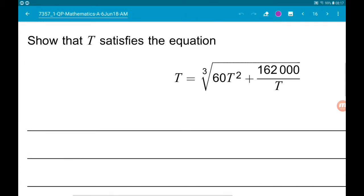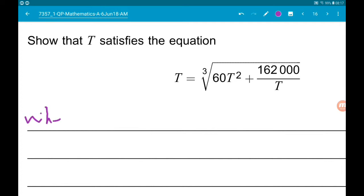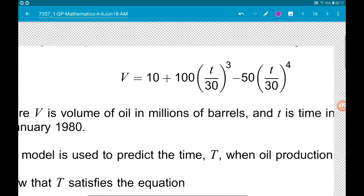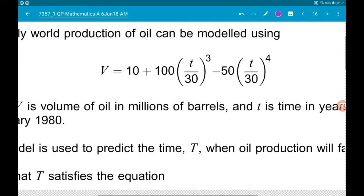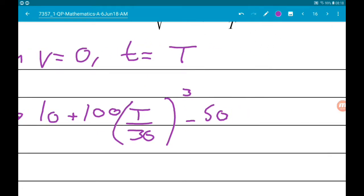So we know that when V is equal to zero, little t is equal to capital T. So we get 10 plus 100t over 30 all cubed minus 50t over 30 to the power of 4.